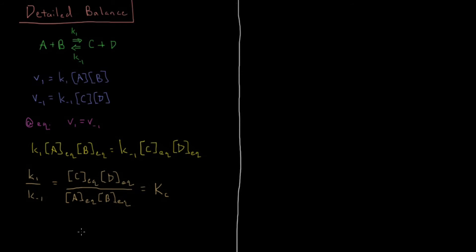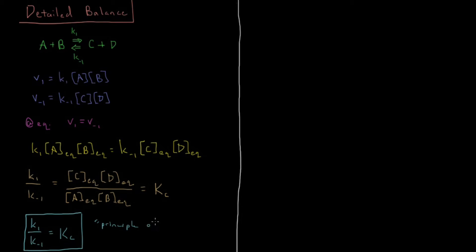So this is actually the principle of detailed balance: the forward and reverse rate constants are related to the equilibrium constant, and their rates are equal to each other at equilibrium. This is the principle of detailed balance, and if you have a chemical reaction which is complex — composed of multiple elementary steps — it is true for each elementary step of the mechanism. It will be true for any elementary reaction that you encounter at equilibrium.